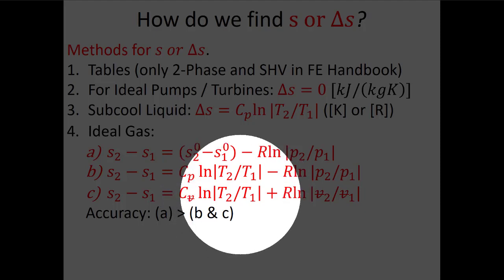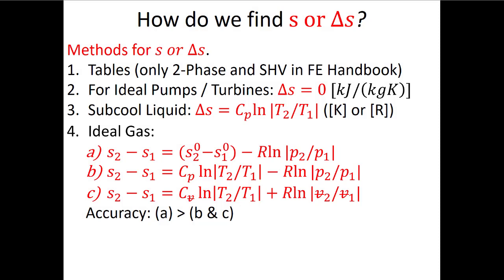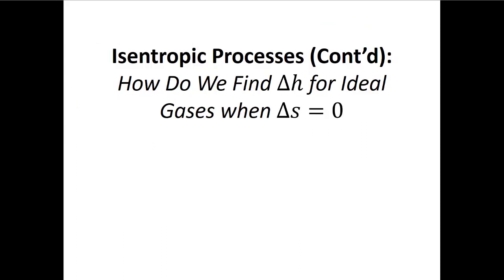For open system processes we often use option B — pressure ratio — because we're more likely to know the pressure ratio. In closed systems where a piston moves, we often know volume ratios, so we'd use option C. Options B and C require assuming constant specific heat, making them less accurate than option A, which uses thermodynamic tables. For isentropic processes, there are additional ways to find the change in specific enthalpy for ideal gases — important when dealing with cycles that have air as the working fluid.